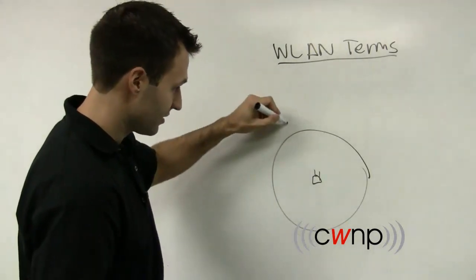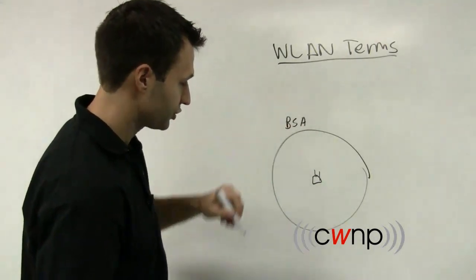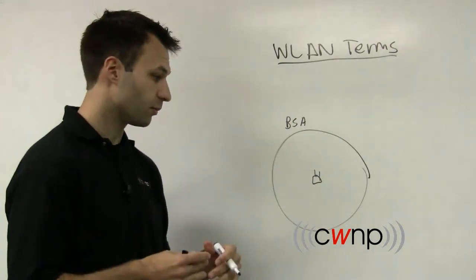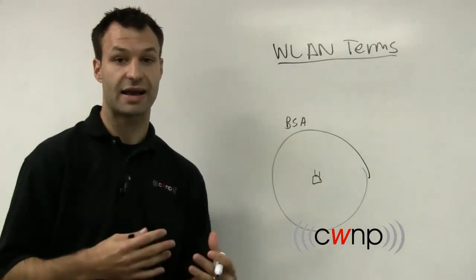And that area is generally called the basic service area. So the BSA, basic service area, is the area provided or served with wireless LAN services by an access point.